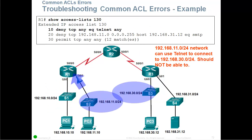The last troubleshooting error is that the 192.168.11 network cannot use Telnet to connect to the 192.168.30 network — or rather, it can use Telnet but should not be able to. So these hosts can Telnet to the destination network, but they shouldn't be able to.